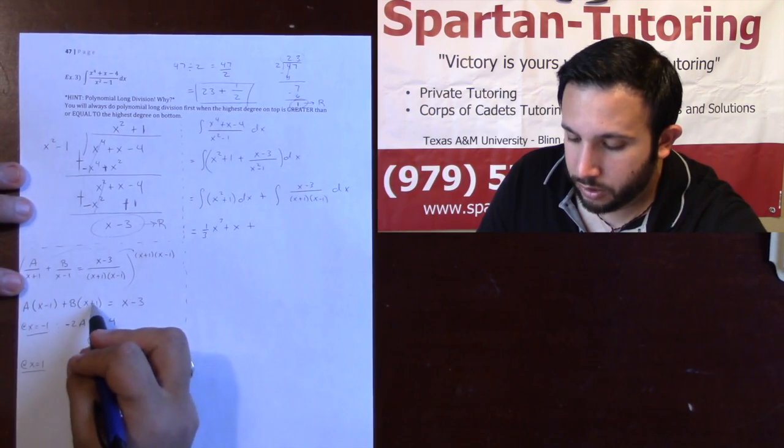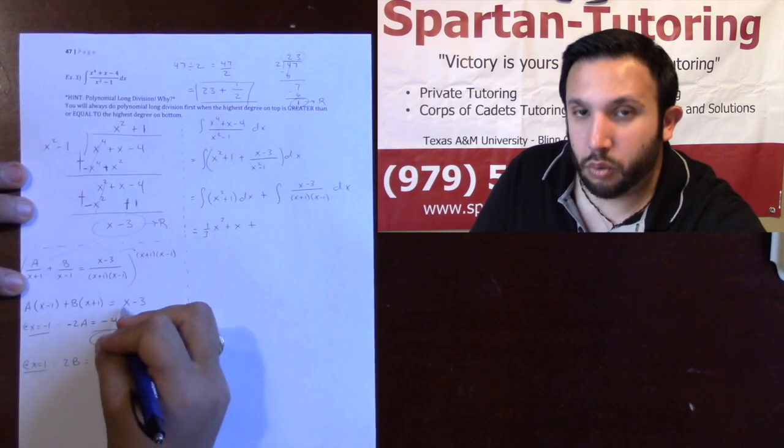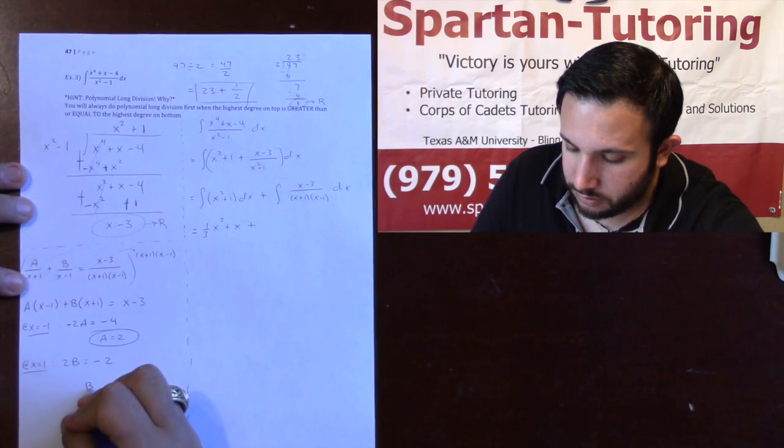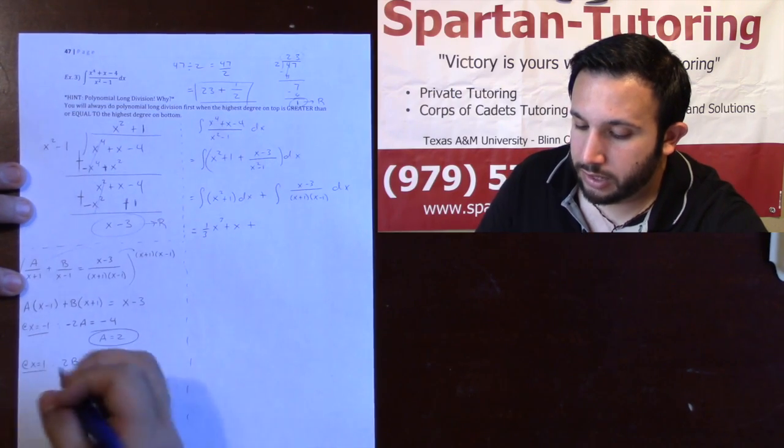And then at x equals positive 1, the a is not going to go away when I plug 1 into there. So plugging 1 into everything, 1 plus 1, that's 2, so 2b. And here, 1 minus 3 is negative 2. And so b is negative 1.